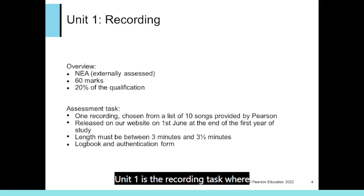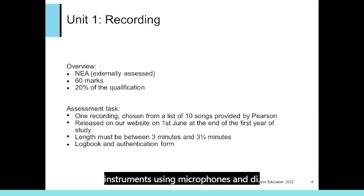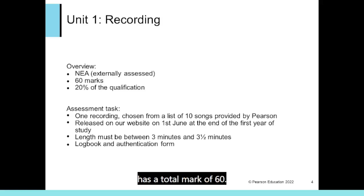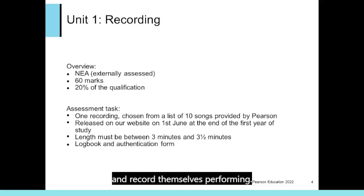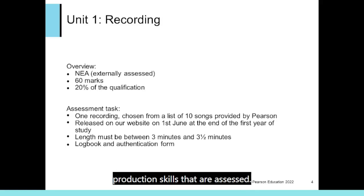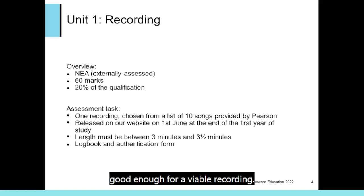Unit 1 is the recording task where students record a song with real instruments using microphones and DI. This is an NEA task with a total mark of 60, forming 20% of the qualification. The candidate would normally record instruments being played by other performers; the candidate is not expected to play all instruments and record themselves. It is the sound quality and music production skills that are assessed — the performance is not assessed. However, the performance must be good enough for a viable recording.